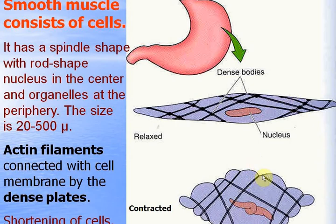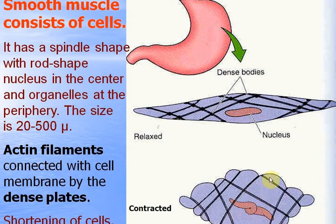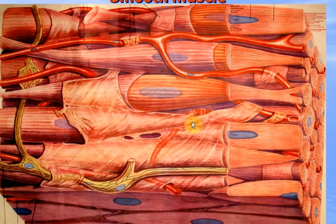During contraction, during excitation, myosin filaments appear. They connect with actin filaments, and actin filaments slide along myosin filaments — muscle cells become shorter and thicker. This process of constriction initiates calcium ion release. They are stored in smooth endoplasmic reticulum and its fragments, caveolae, located under the cytolemma at the periphery of the cell.